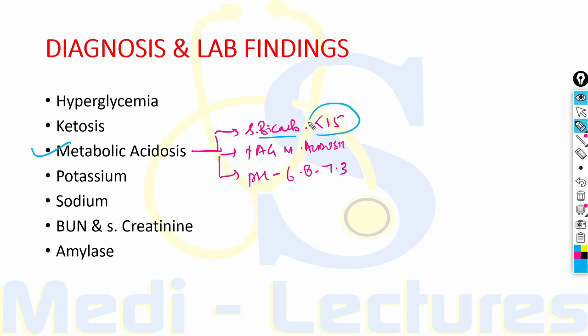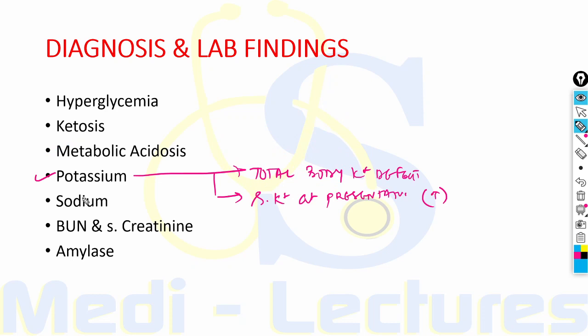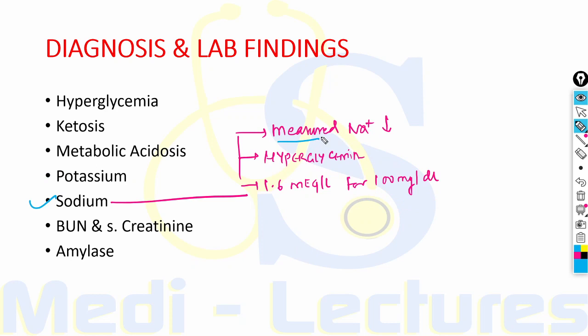Metabolic acidosis is denoted by serum bicarbonate less than 15 mmol/L, increased anion gap metabolic acidosis, and pH usually between 6.8 to 7.3 depending on severity. Regarding potassium levels, total body potassium is depleted, but serum potassium at presentation is usually elevated, secondary to acidosis and volume depletion.